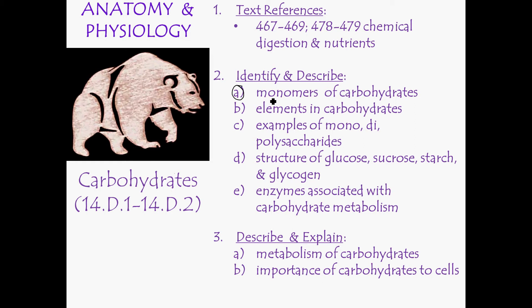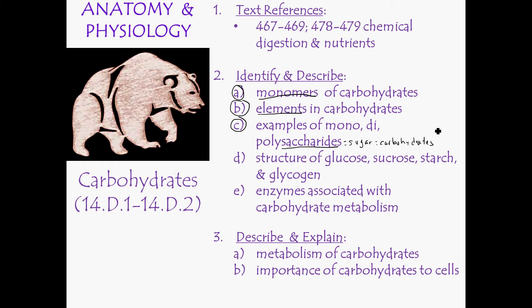You should be able to identify and describe the monomers of carbohydrates — mono means one, so the single units. Be able to identify the elements from the periodic table, and identify and describe examples of mono-, di-, and polysaccharides. The suffix 'saccharide' refers to sugar or carbohydrates, so the terms carbohydrates, sugars, and saccharides are all dealing with the same family of molecules.